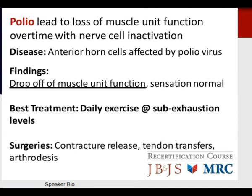Polio is often tested on board exams. Polio leads to a loss of muscle unit function over time with nerve cell inactivation — a disease of the anterior horn cells. Findings include a drop-off of muscle unit function while sensation is often normal. The best treatment is daily exercise at sub-exhaustion levels, as exercise above exhaustion leads to progression and decreased function. Surgeries include contracture release, tendon transfers, or arthrodesis.